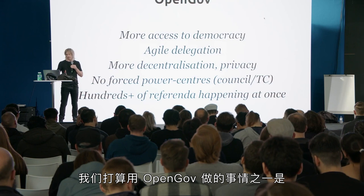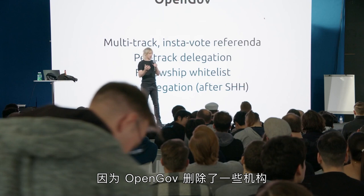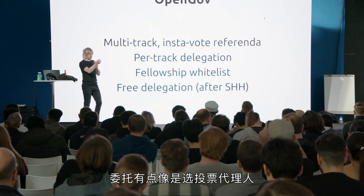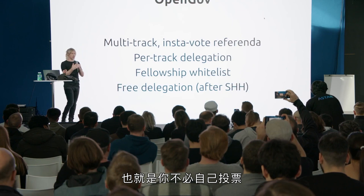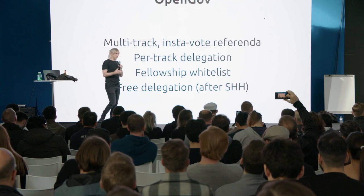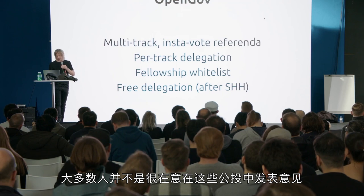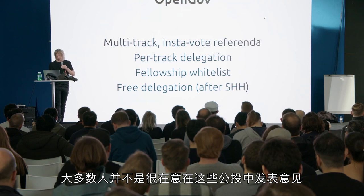One of the things we're aiming to do with OpenGov is allow free delegation. Because OpenGov removes bodies like the technical committee and the council, we want to introduce free delegation — effectively a way of having representatives so you don't have to vote yourself. We want to get as many people delegating as possible, and this is hard if it costs money, because most people don't want to pay money just to have a voice. The assumption is that if it's free and easy, maybe we get a lot more people on board.